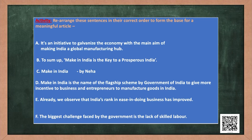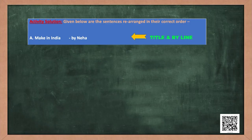Are you ready for a little activity? I am giving you a few sentences — I want you to rearrange them in the correct order to form the base of a meaningful article on 'Make in India.' The sentences are: 'It's an initiative to galvanize the economy with the main aim of making India a global manufacturing hub,' 'To sum up, Make in India is the key to a prosperous India,' 'Make in India — by Neha,' 'Make in India is the name of the flagship scheme by the Government of India,' 'Already we observe that India's rank in ease of doing business has improved,' and 'The biggest challenge faced by the government is the lack of skilled labor.' I think the title and byline would come first.